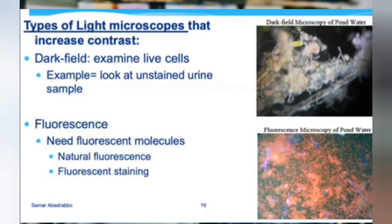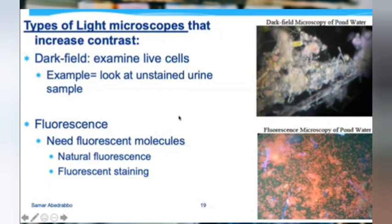Fluorescence microscopy uses UV light so you can see organisms that are naturally fluorescent. For example, in San Diego Bay there are fluorescent organisms — if you use a fluorescent microscope you can see their fluorescence. You can also artificially add fluorescent molecules to organisms and use a fluorescent microscope to view them, though this could harm the cells.